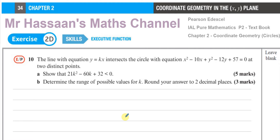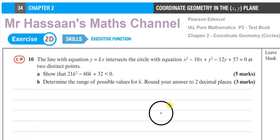Basically, we have to form this inequality from the given information and then solve it to find the values of k which satisfy it. The information given is about the straight line y = kx intersecting a circle. So let's say here we have a circle and here we have a straight line.